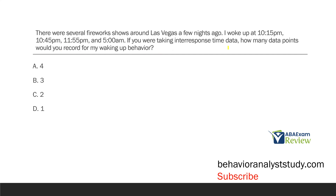There are several fireworks shows around Las Vegas a few nights ago. I woke up at 10:15 p.m., 10:45 p.m., 11:55 p.m., and 5 a.m. If you were taking inter-response time data, how many data points would you record for my waking up behavior? This is a measurement question looking at inter-response time. We need to determine when we start taking data — is it before the first response, after the first response, or before the second response? Inter-response time data begins when the first response ends, because inter-response time is the time between responses — between the end of one response and the start of another.